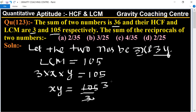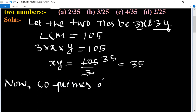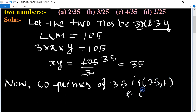105 divided by 3 equals 35. So xy equals 35. Now 35 is not prime, so its factor pairs are: 35 comma 1, and 7 comma 5.